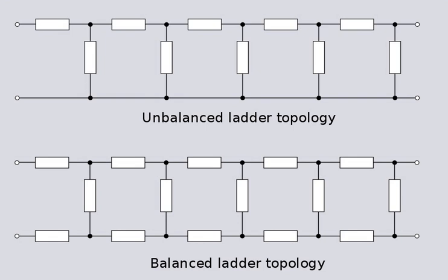In circuit diagrams, lines represent conductors, filled small circles represent junctions of conductors, and opened small circles represent terminals for connection to the outside world. In most cases, impedances are represented by rectangles. A practical circuit diagram would use the specific symbols for resistors, inductors, capacitors, etc., but topology is not concerned with the type of component in the network, so the symbol for a general impedance has been used instead.